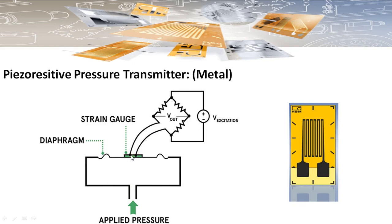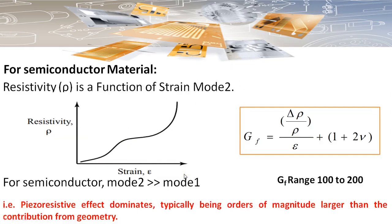This resistance change forms part of a Wheatstone bridge, which measures the change in resistance and gives a voltage output. The foil-type strain gauge needs to be bonded to the diaphragm.